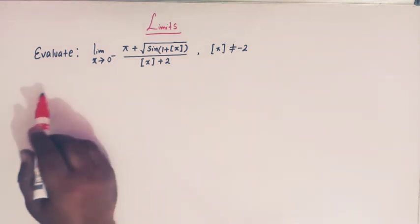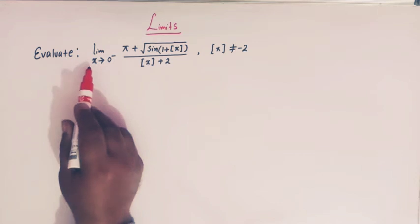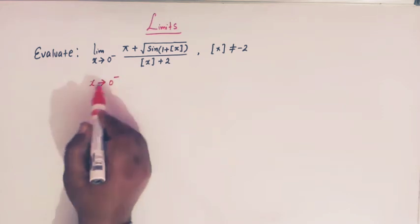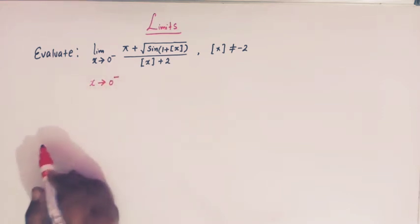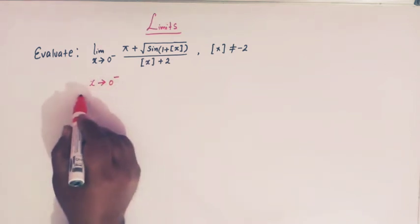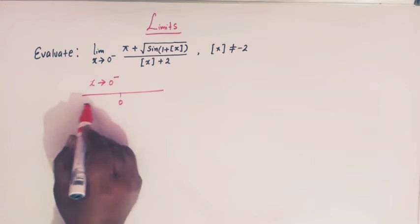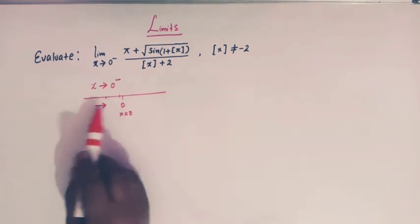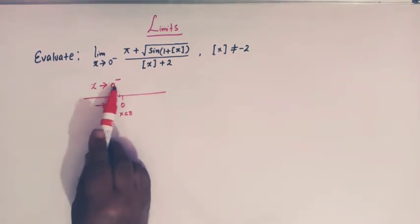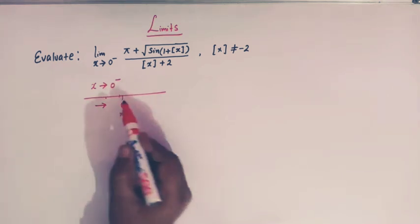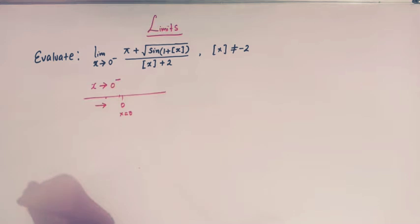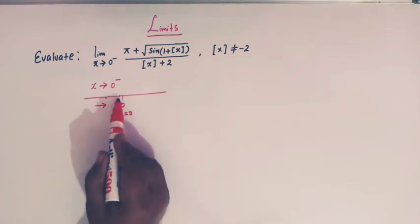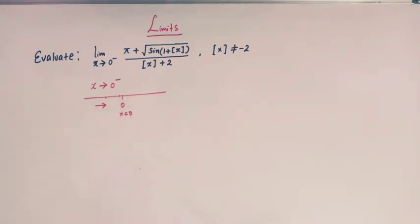So let us evaluate this limit. Here x tends to 0 minus — what does this notation imply? It implies that we have to approach 0 from the left of x equals 0. Moreover, when x tends to 0 minus, we are very close to x equals 0.